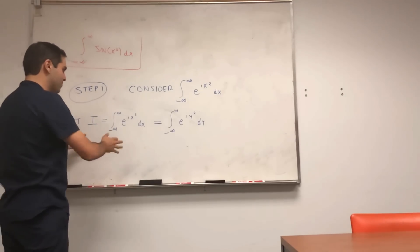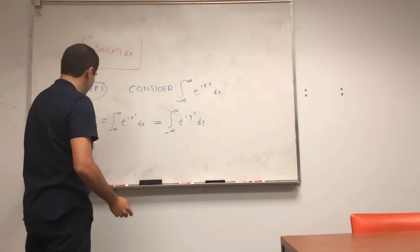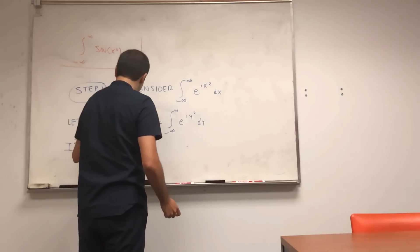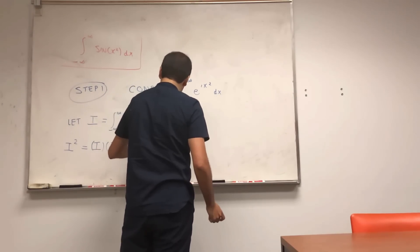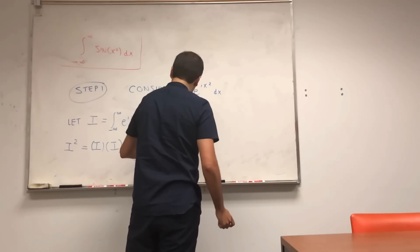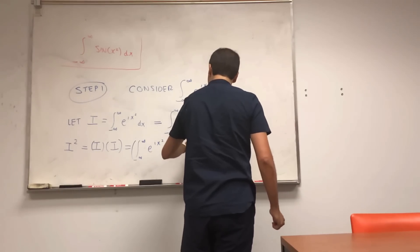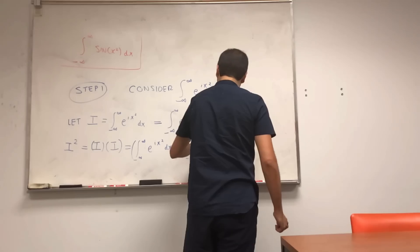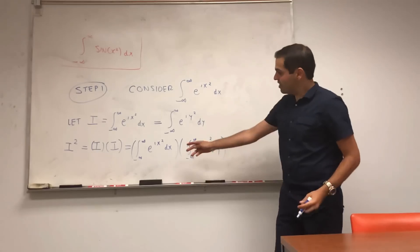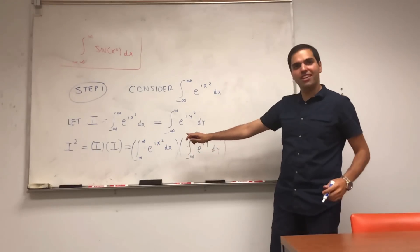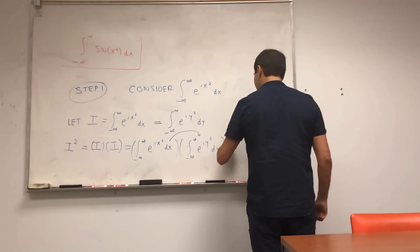And the nice thing is, we can multiply this. So I squared then becomes I times I, integral from minus infinity to infinity of e to the ix squared dx, times integral from minus infinity to infinity of e to the iy squared dy. And look, the nice thing is, this becomes a constant with respect to y. So we can just pull it inside the integral.